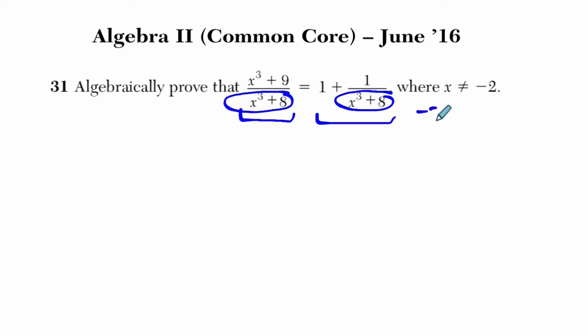Think about that, right? You have negative 2 cubed plus 8. Well, what's that? That would be negative 2 cubed is negative 8, plus 8 is 0, and then 1 divided by 0, and x cubed plus 9 divided by 0 would be undefined.